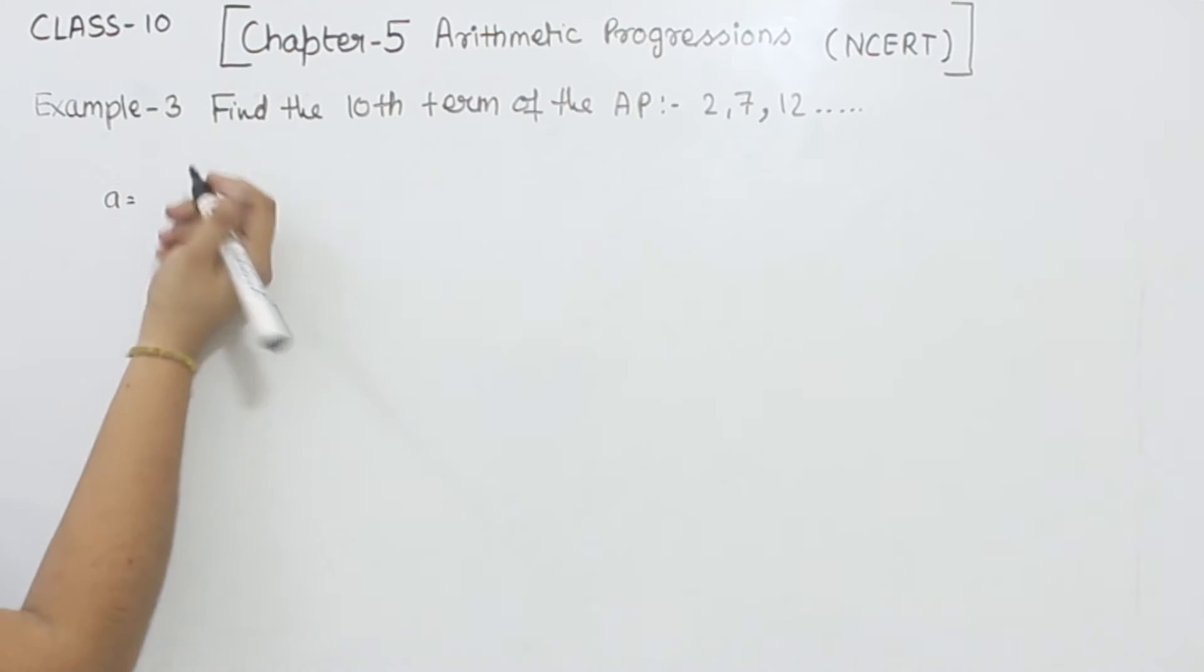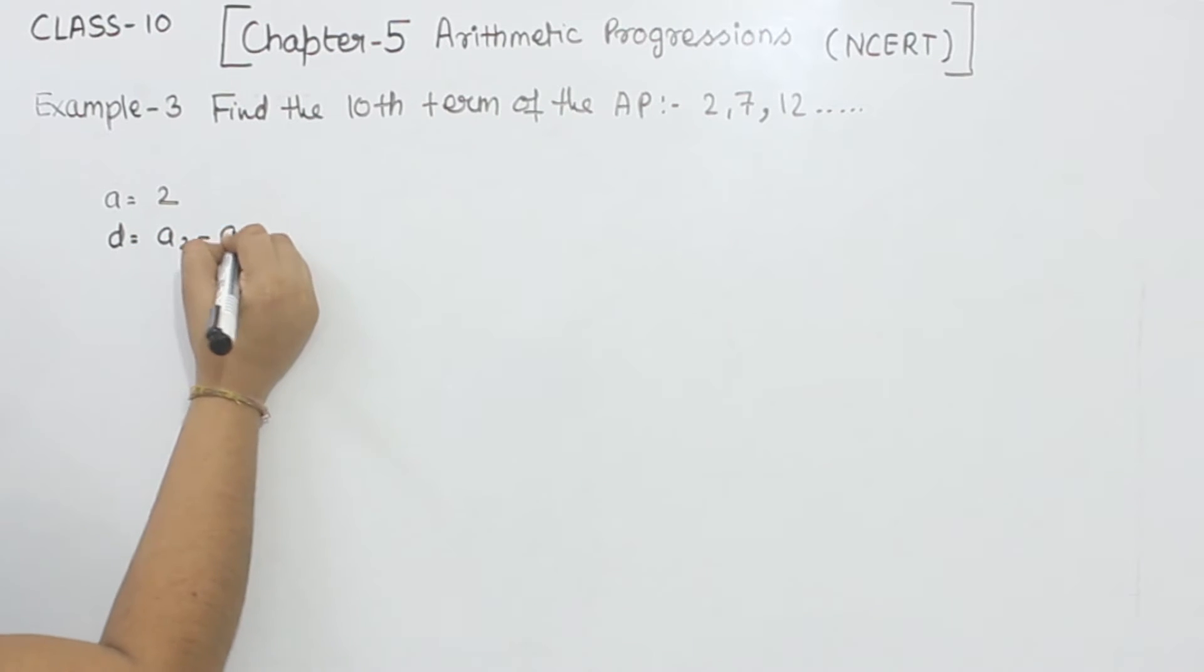First of all, the first term is 2 and the common difference is A2 minus A1. This is 7 minus 2, so this is equal to 5. The difference is equal to 5 here.